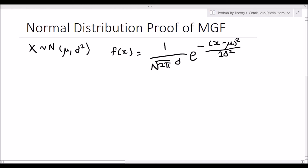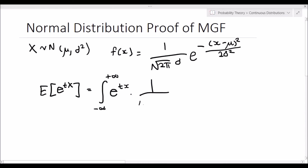And a reminder about what the moment generating function is by definition: it's the expected value of e to the tx, which is equal to the integral from negative infinity to positive infinity of e to the tx multiplied by 1 over square root 2 pi sigma, times e to the negative x minus mu squared over 2 sigma squared, dx.